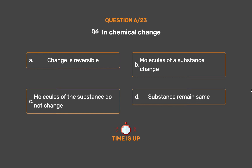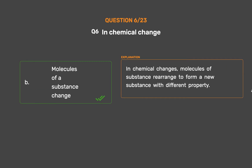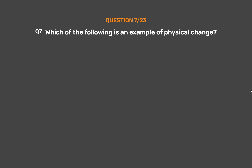The correct answer is Option B: Molecules of a substance change. In chemical changes, molecules of a substance rearrange to form a new substance with different properties.